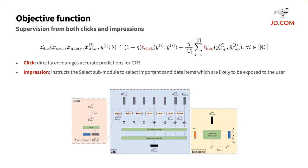CRM's supervision signals come from two sources: clicks, that is whether the exposed item is clicked, and impressions, that is whether the candidate item is exposed. The click supervision directly encourages accurate prediction for CTR, and the impression supervision instructs the SELECT submodule to select important candidate items which are likely to be exposed to the user.